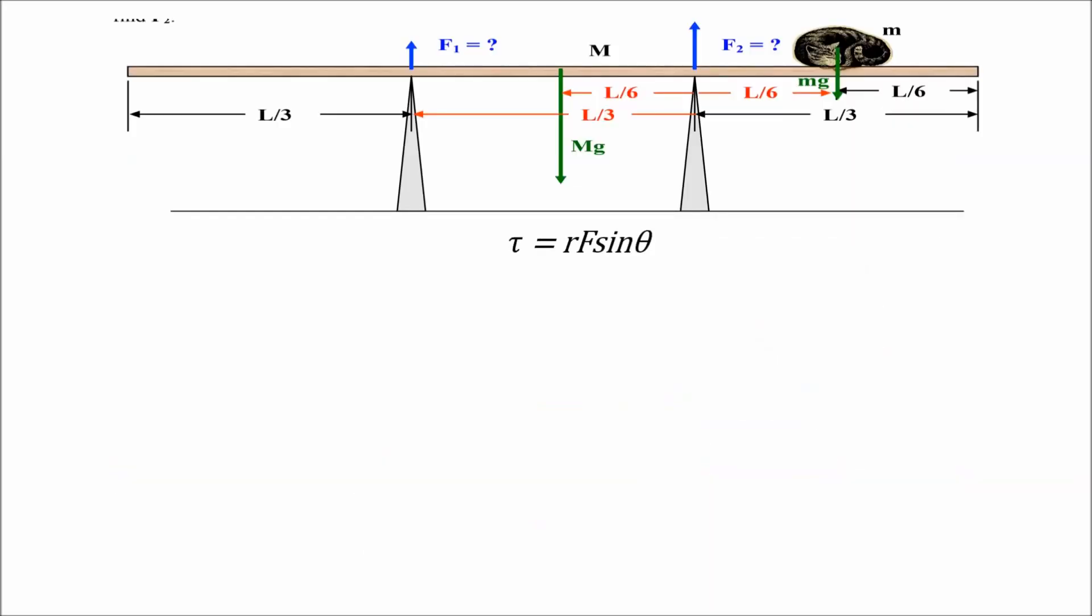Let's apply the torque equation around the right hand sawhorse contact point. Torque net inward is equal to zero. In this example the angle is 90, so sine 90 is equal to 1. So the equation is.